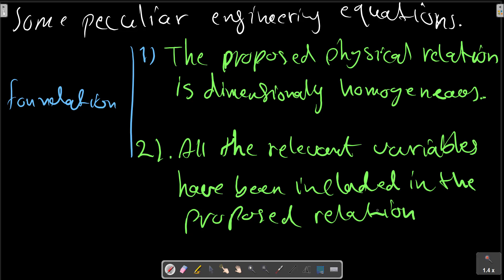The proposed physical relation is dimensionally homogeneous. All the relevant variables have been included in the proposed relation. We evaluated these in the dimensional analysis in the previous videos. If a relevant variable is missing, dimensional analysis will fail.